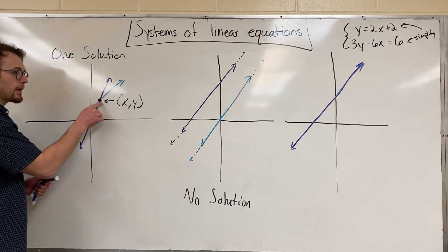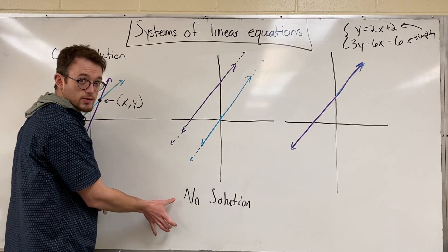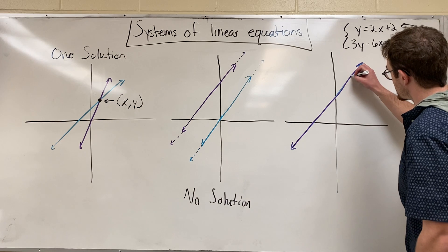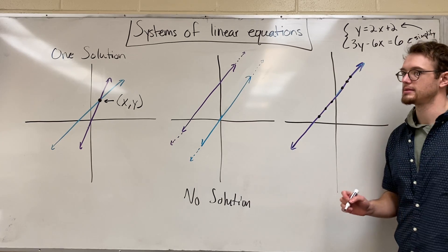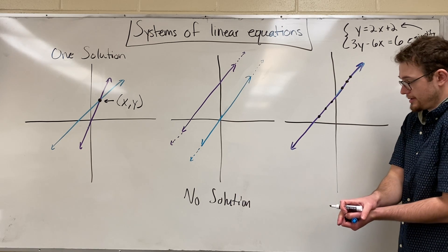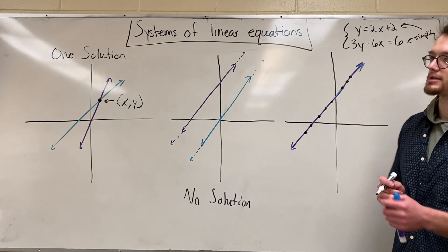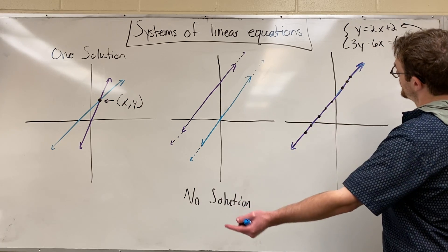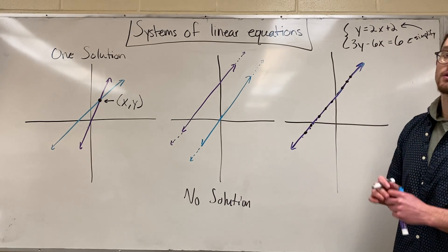A point of intersection is a solution. With parallel lines they don't intersect, so no solution. But with these — they intersect there, they intersect there, they intersect everywhere — because the line is on top of itself. They're constantly overlapping, intersecting everywhere. Since this line keeps going forever, there's an infinite amount of points — infinite solutions.